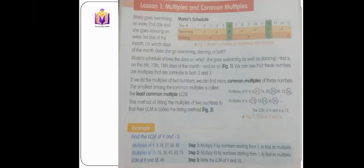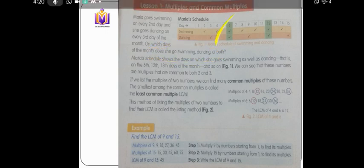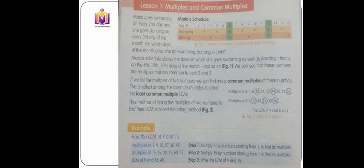Here is a word problem: Maria goes swimming every second day and dancing every third day. On which day of the month does she go for both swimming and dancing? For swimming, skip count by 2: 2, 4, 6, 8. For dancing, skip count by 3. We need to find the common multiples of 2 and 3. The common multiples are 6 and 12 — so she goes for both swimming and dancing on day 6 and day 12.